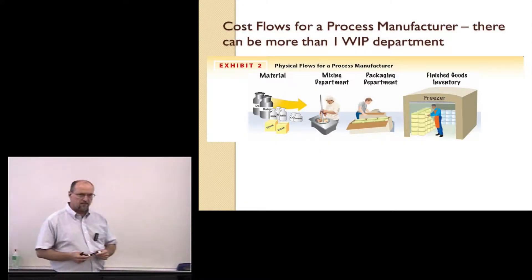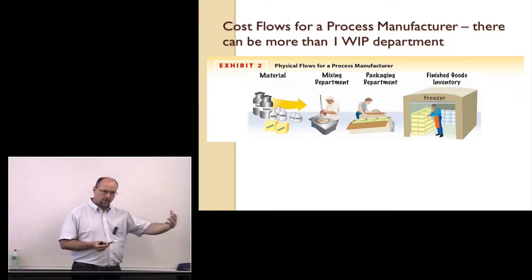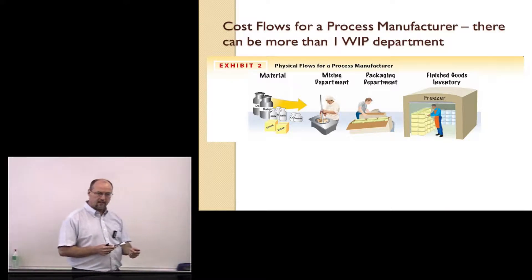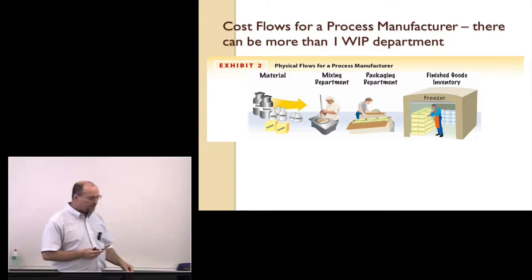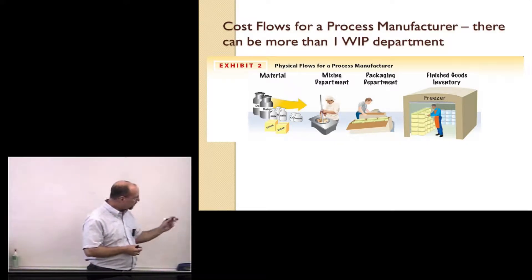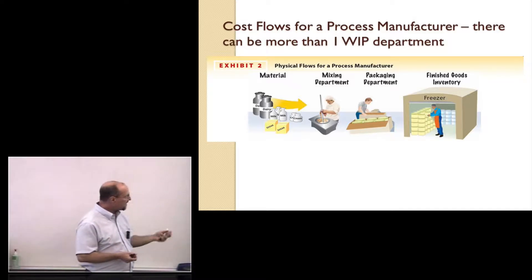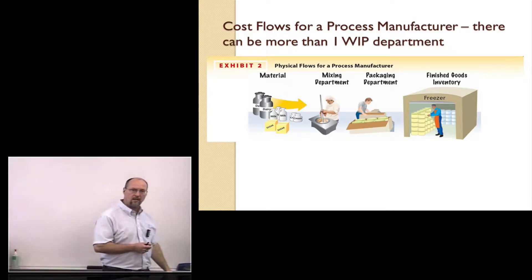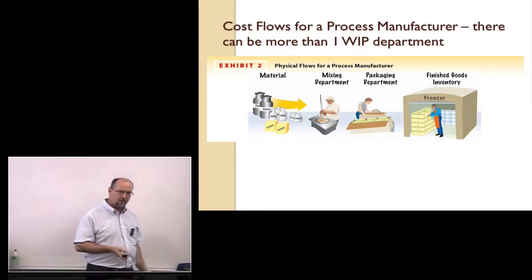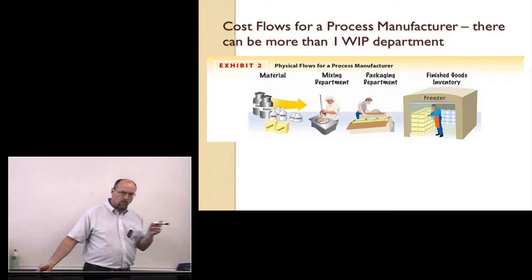One of the unique things about process costing is that you can have more than one work in process department. In job order costing, we take raw materials, requisition them into production, add labor and manufacturing overhead, and when the job's finished we transfer it to finished goods inventory, then cost of goods sold. The only difference here is that you can have multiple work in process departments. For example, making ice cream: raw materials, then you mix it with labor, machines, and energy as overhead, then it goes to packaging, then to finished goods. You could have three, four, or five work in process departments — that's what's unique about process costing compared to job order costing.